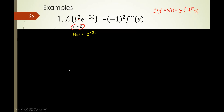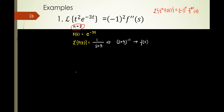Yes, that means f(t) is e to the negative 3t. So what is the Laplace of f(t)? Applying the formula, the Laplace is 1 over (s + 3). We can rewrite this as (s + 3) to the negative 1 — this is F(s). The first derivative of F(s) is negative 1 times (s + 3) to the negative 2, which is negative (s + 3)^(-2).